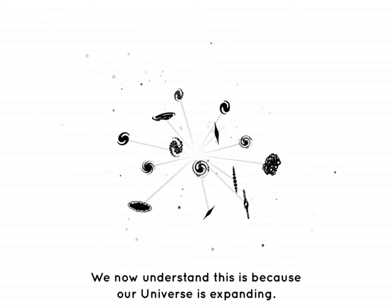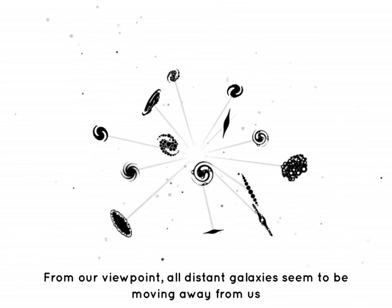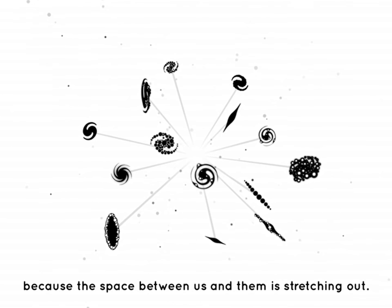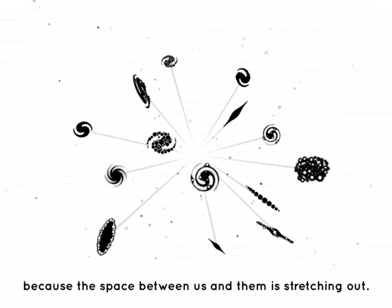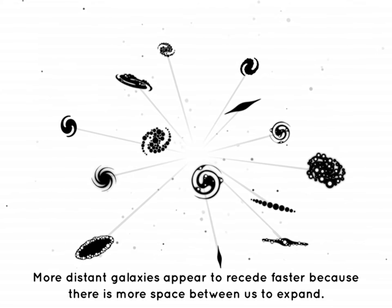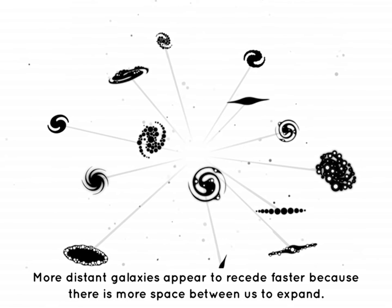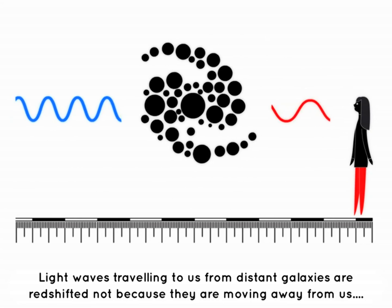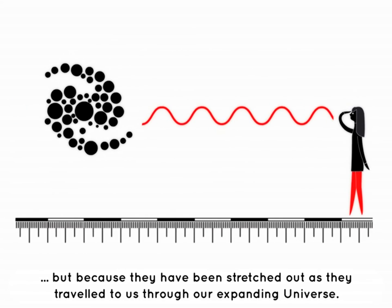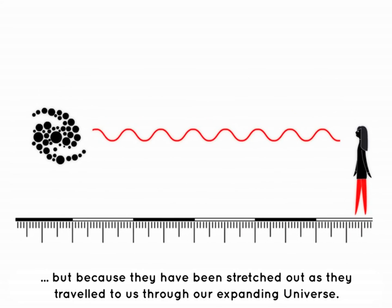We now understand this is because our universe is expanding. From our viewpoint, all distant galaxies seem to be moving away from us, because the space between us and them is stretching out. More distant galaxies appear to recede faster because there is more space between us to expand. Light waves traveling to us from distant galaxies are redshifted not because they are moving away from us, but because they have been stretched out as they traveled through our expanding universe.